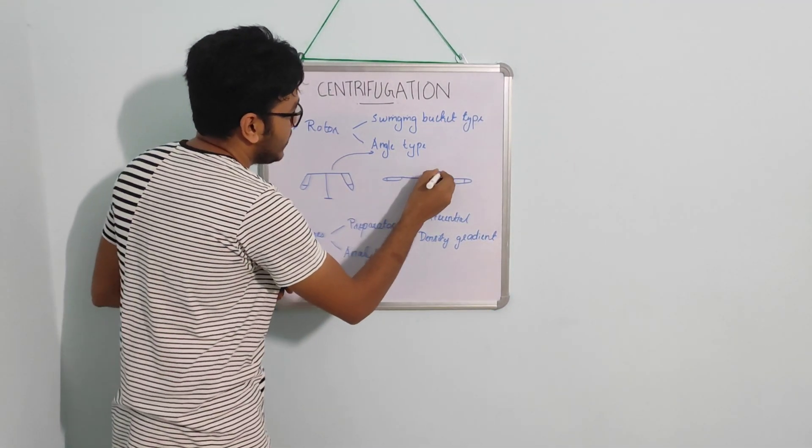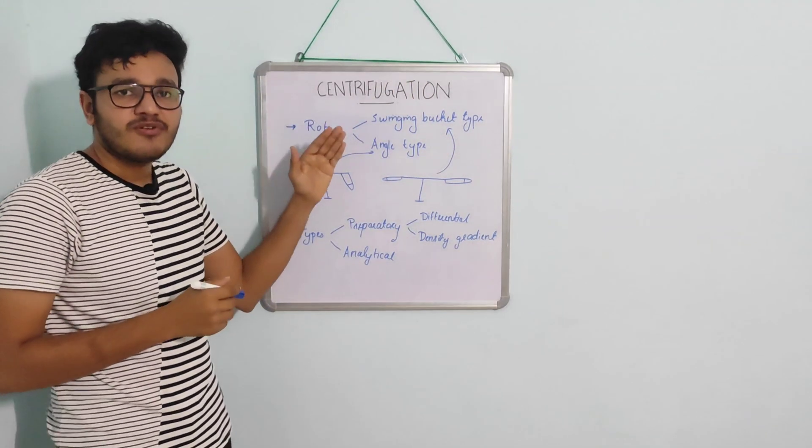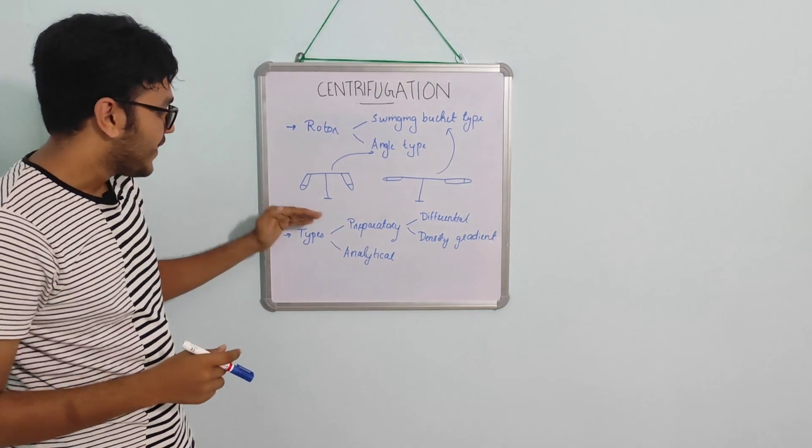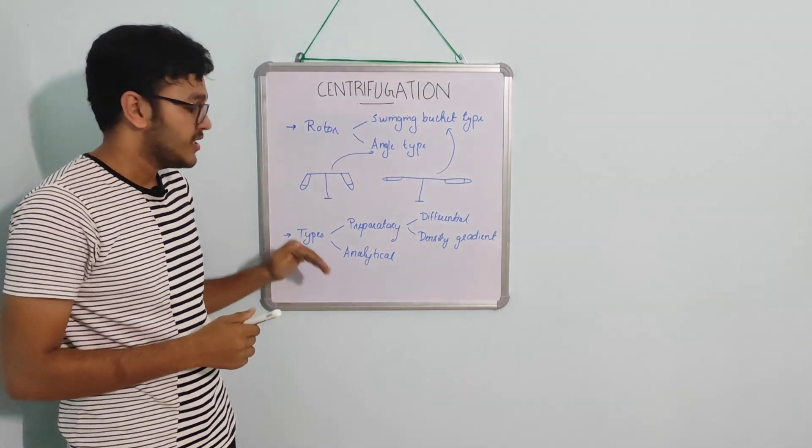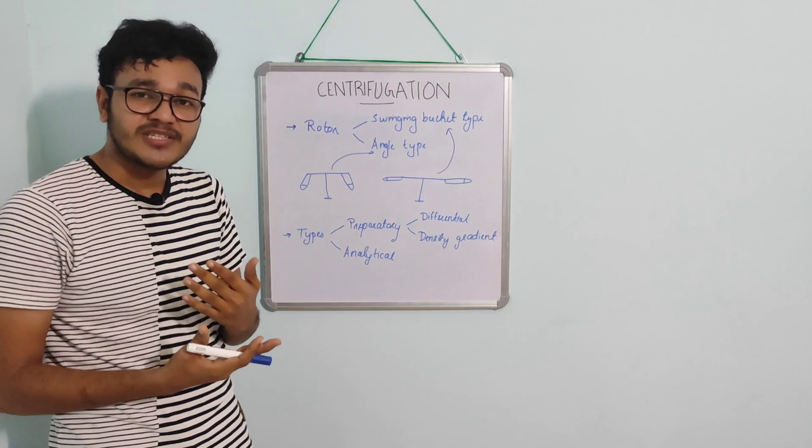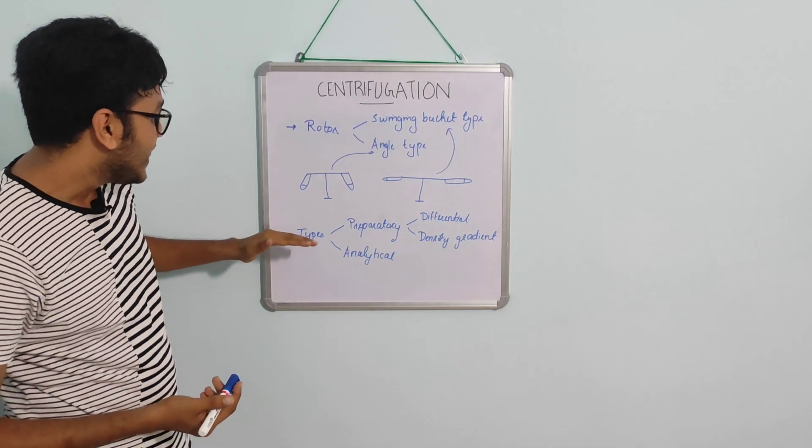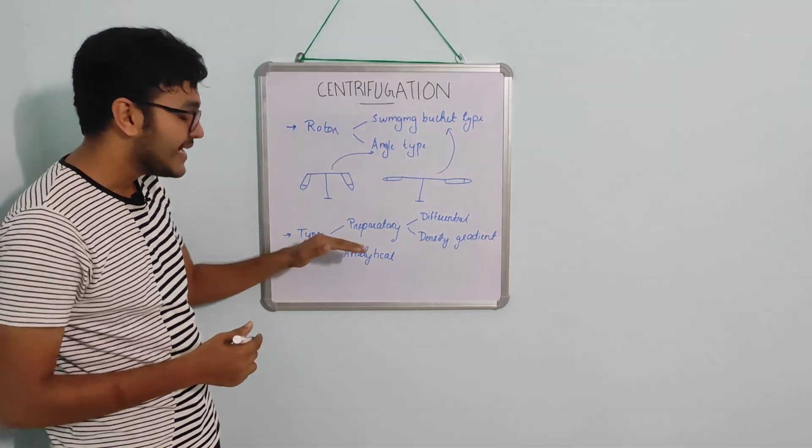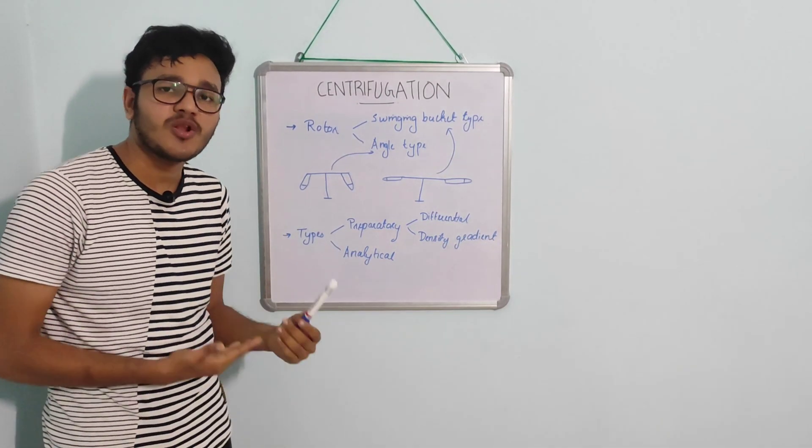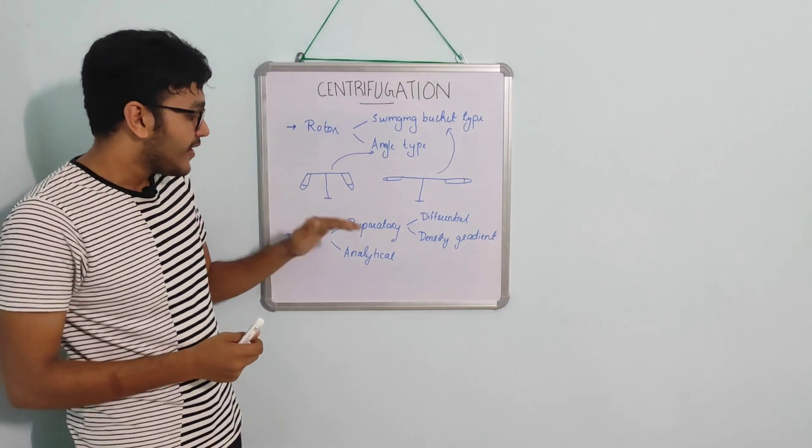Based on the purpose, centrifuge is divided broadly into two: preparatory centrifuge and analytical centrifuge. Preparatory centrifuge is commonly used for isolation and purification of compounds, what we commonly see in chemistry labs. Whereas the analytical centrifuge is used for analyzing chemical compounds present in a solution.